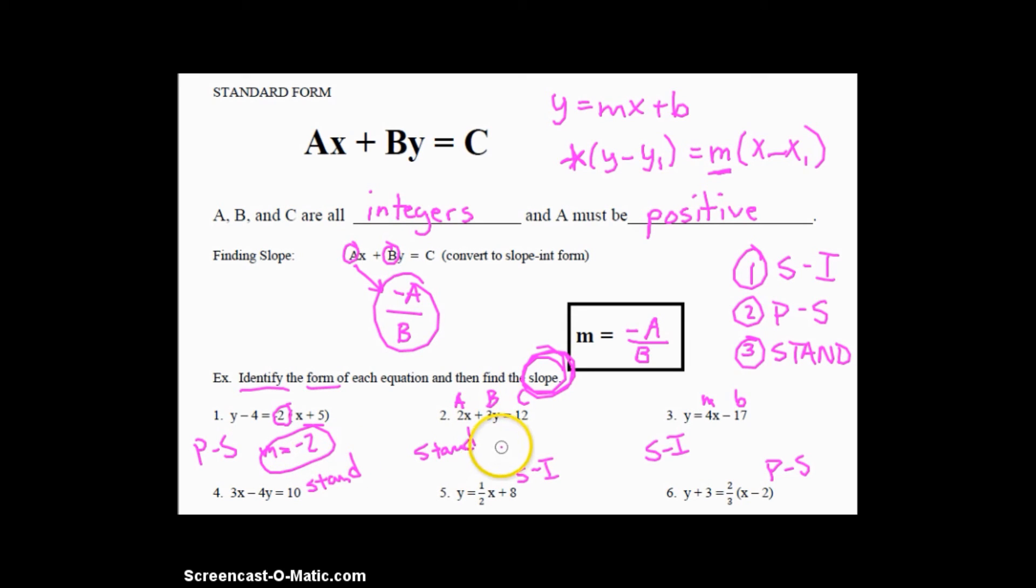Number two, we're looking at standard form. Now, standard form, we're actually going to have to use this formula right here. m equals opposite a over b. So if you use that formula, a is two. But what's the opposite of it? Negative two. Dividing by b, which is three. And that's it. That's our slope. And number three, y equals 4x minus 17. m I've already located right here is this 4. 4 is our slope. So m equals 4.